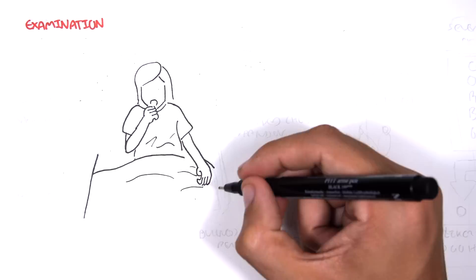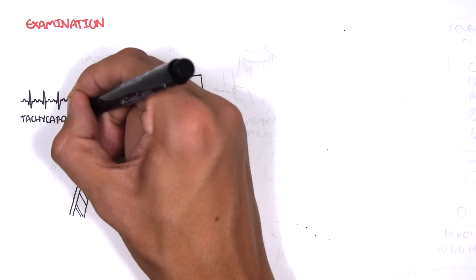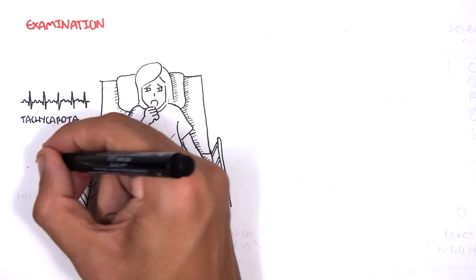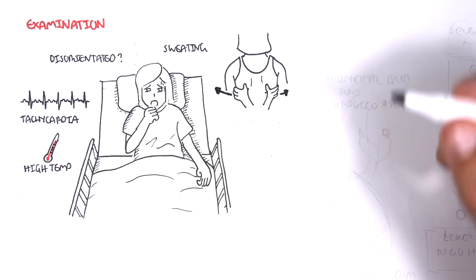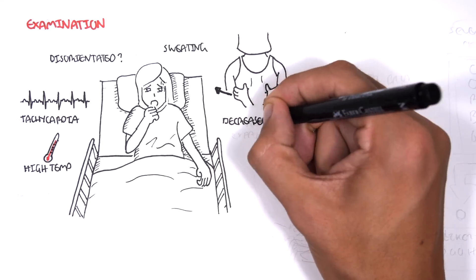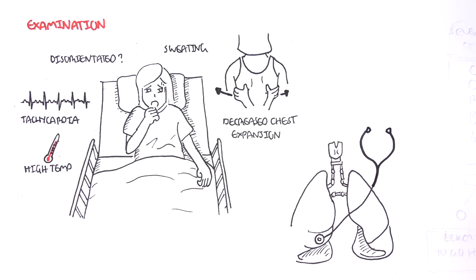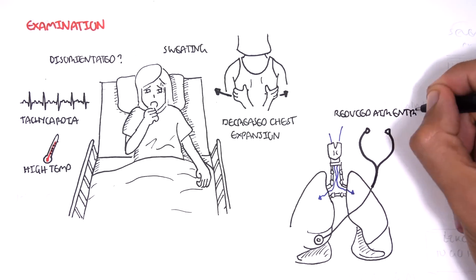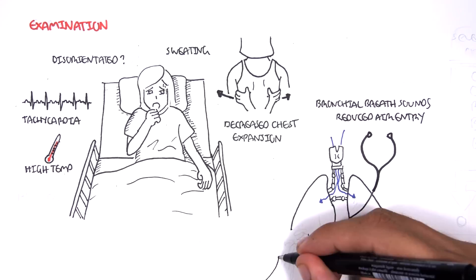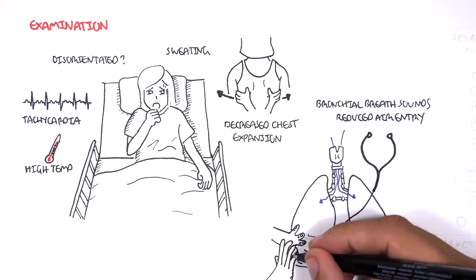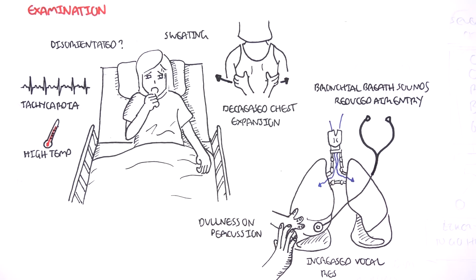On examination, a patient with pneumonia can be tachycardic, have a high fever, sweating, and be disorientated. They have decreased lung expansion on the infected side, reduced air entry and bronchial breath sounds, dullness on percussion on the affected lobe, and also increased vocal resonance.